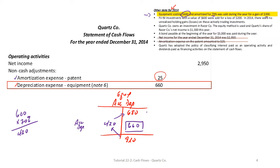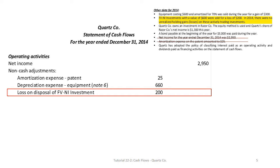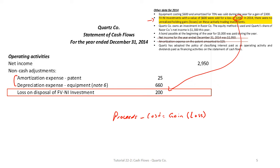Those two items exhaust amortization and depreciation. Now we look at gains and losses for which no cash is exchanged. We are told there is a loss on disposal of a fair-value-through-net-income investment, and the loss amount is given as $200, so we don't have to calculate it. Sometimes you may have to calculate the gain or loss using: proceeds minus cost equals gain or loss.